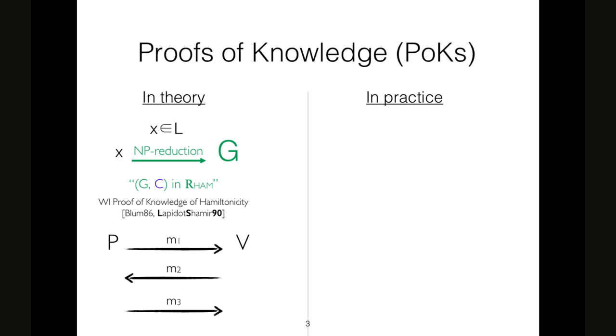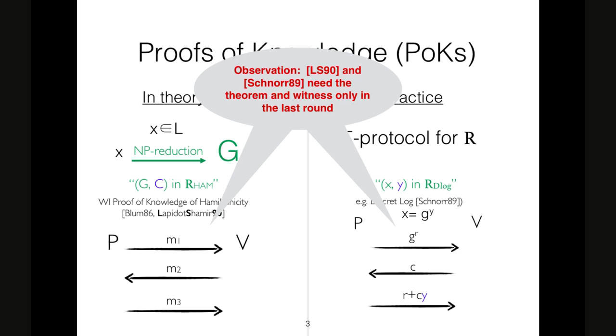From the theoretical side, we know that proof of knowledge exists for graph Hamiltonicity. This means that we construct proof of knowledge for all languages in NP. From the theoretical side, we can use Sigma protocols for NP relation R. Here we have an example of a Sigma protocol that is really efficient. Actually, the prover only needs one modular exponentiation to complete the execution, while on the other side, in the theoretical side, we need to compute an NP reduction that is really expensive.